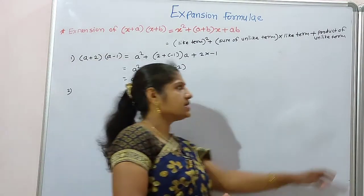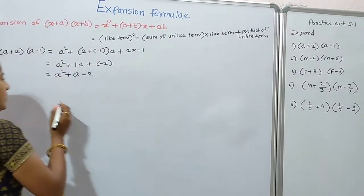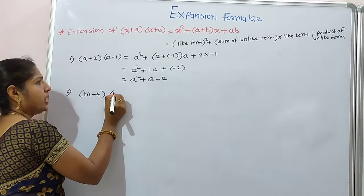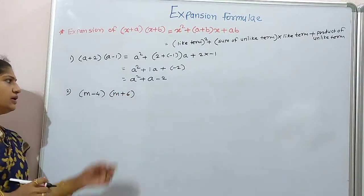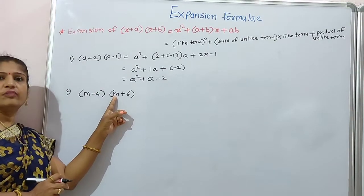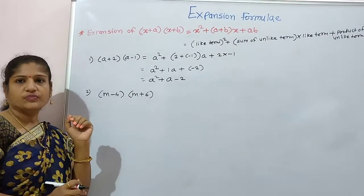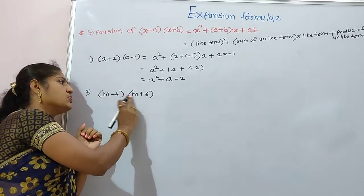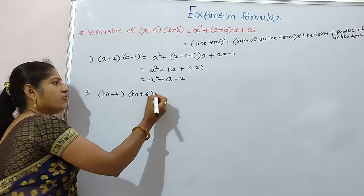Now another example: m minus 4 into m plus 6. Here, m is the like term — m is common in both brackets — and minus 4 and 6 are the unlike terms.